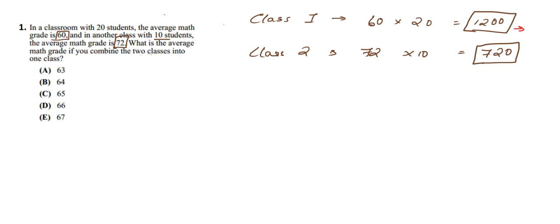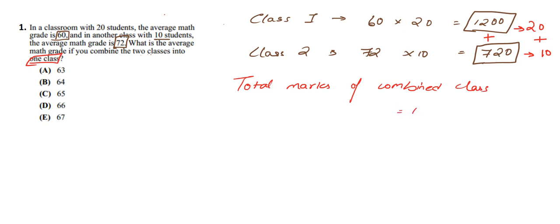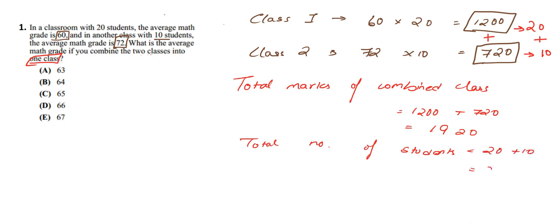1200 is the total marks for 20 students, and 720 is the total marks for 10 students. We need to add these two totals. The total marks of the combined class will be 1200 plus 720, which gives us 1920. The total number of students is 20 plus 10, which equals 30.